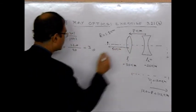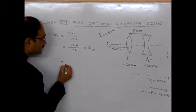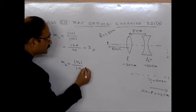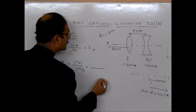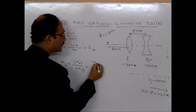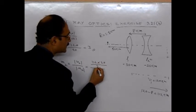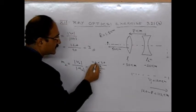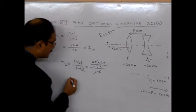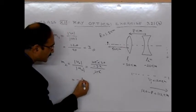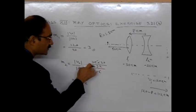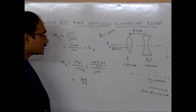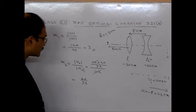Now, for the concave lens, if I call the magnification to be M2, again, this is V2 by U2. So V2, we have found out to be minus 112 into 20 divided by 92. And U2 was 112. So this will cancel out. So here, we get it to be 20 by 92.